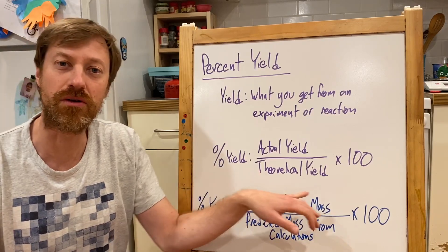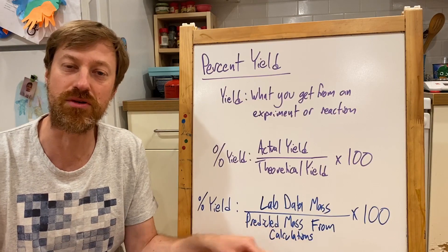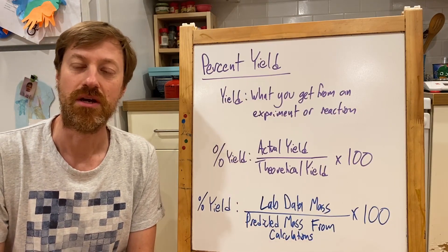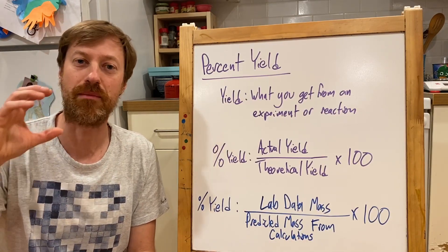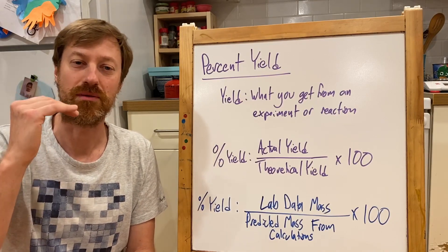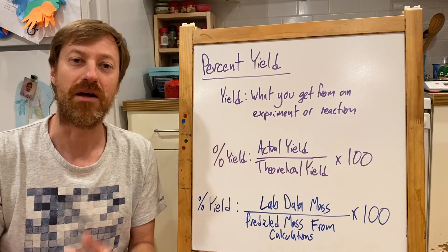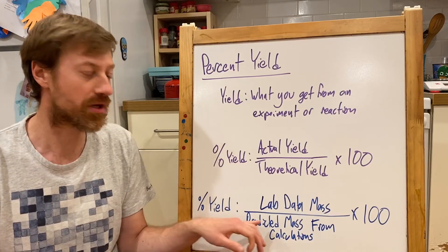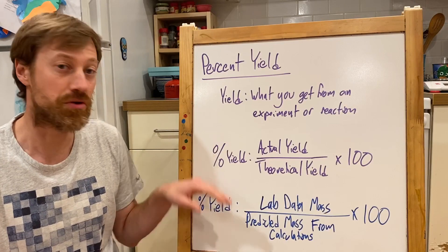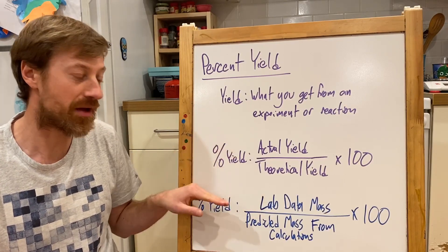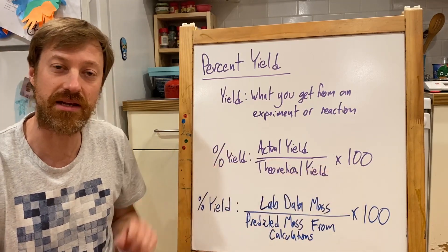The theoretical yield is what you would predict — it's the predicted mass from your stoichiometry calculations. So if you do all your stoichiometry calculations, start out with the mass of your reactant, go to grams, apply the mole ratio, then calculate grams of the product — those calculations are going to give you the theoretical yield. To get percent yield, you divide the actual yield by the theoretical yield, then multiply by 100 to get it into a percent.